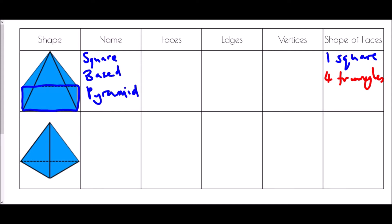Vertices are the points of the shape, so we've got one, two, three, four at the corners and one right at the top — five vertices. The edges are the lines which join those vertices together: one, two, three, four, five, six, seven, eight — we have eight edges. The number of faces: we have a square at the bottom and four triangles, so we have five faces.